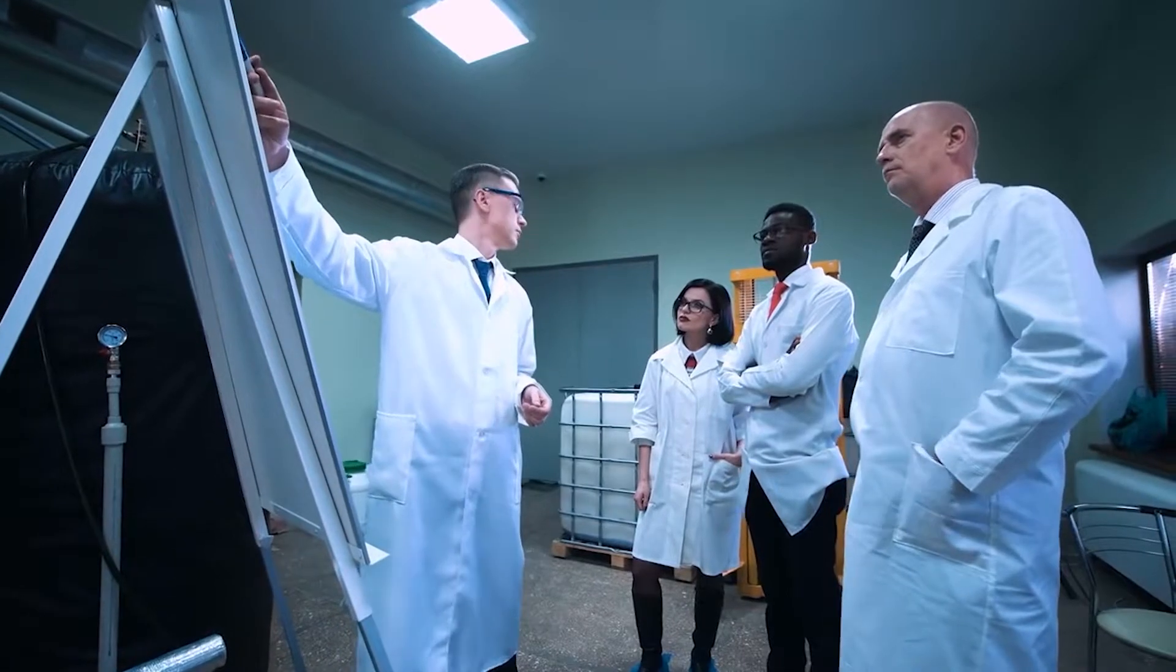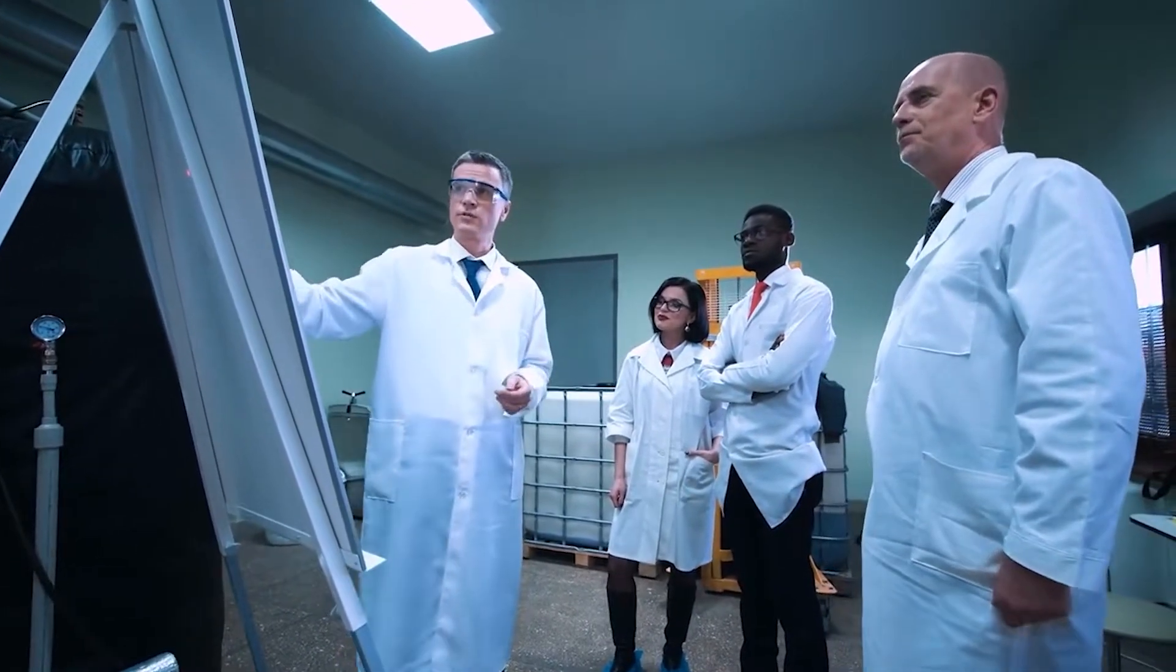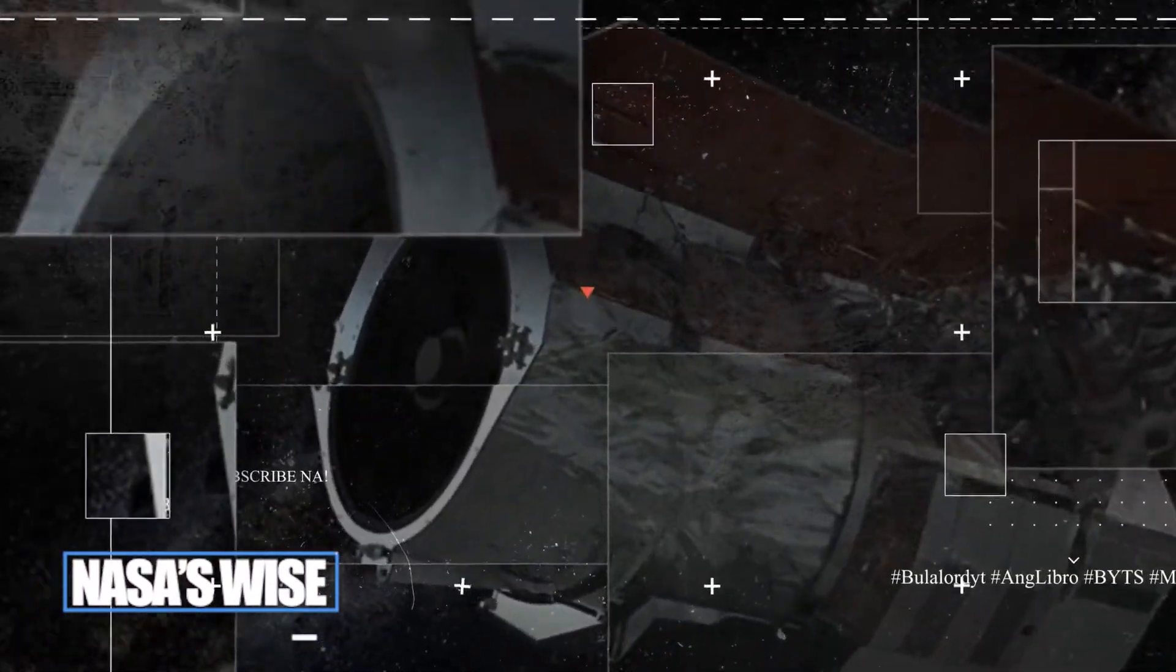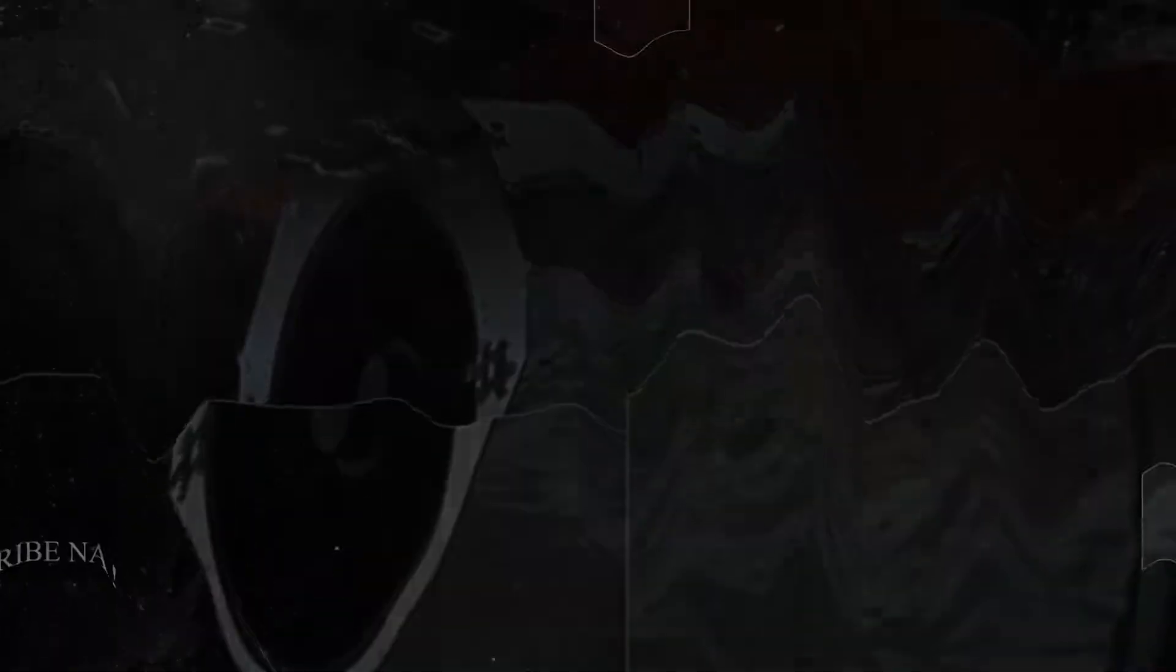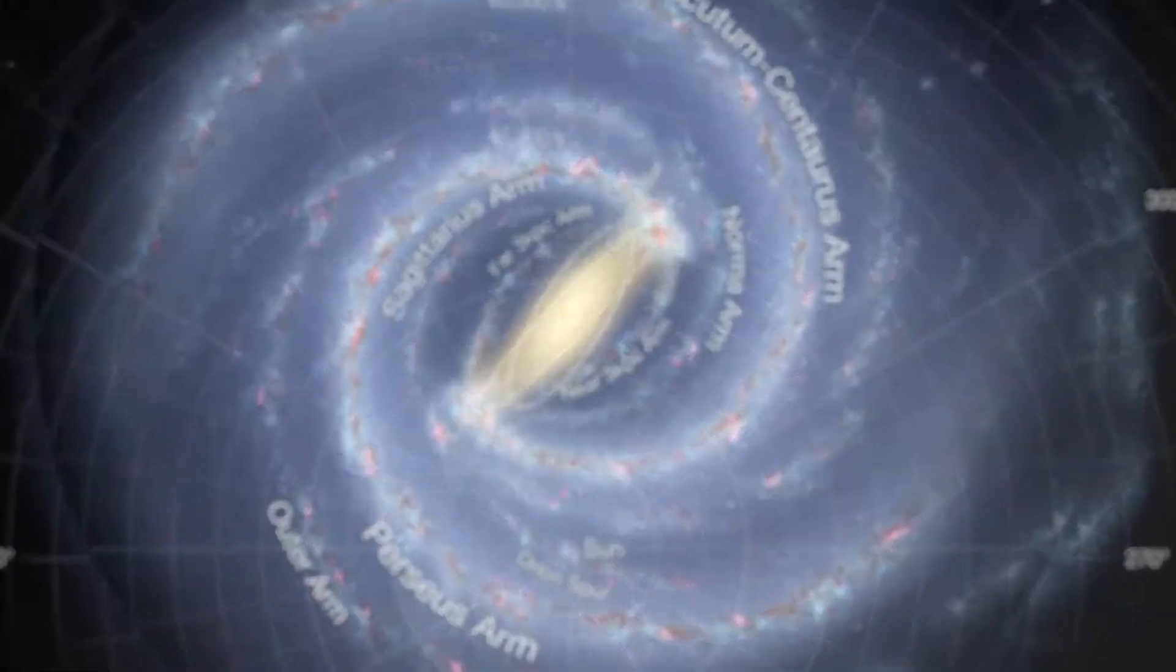Following the discovery of the galaxy's arms, there was a long-standing debate over whether the spiral comprises four or two of them. This was settled by NASA when it confirmed the existence of four arms, which we named Norma and Cygnus, Sagittarius, Scutum Crux, and Perseus.